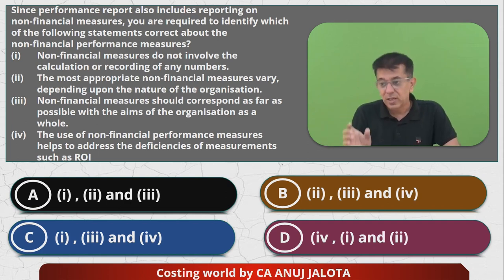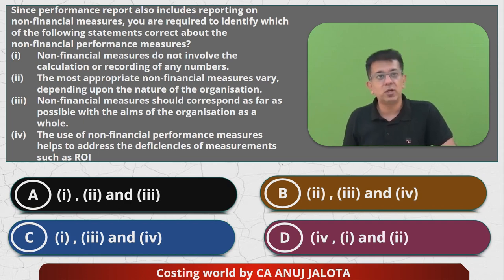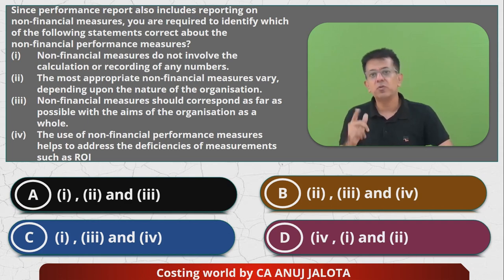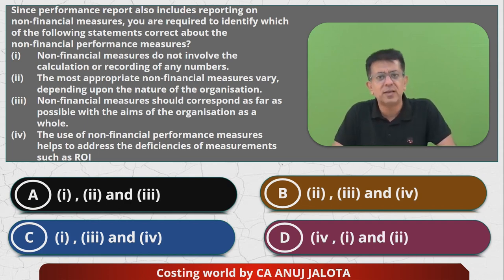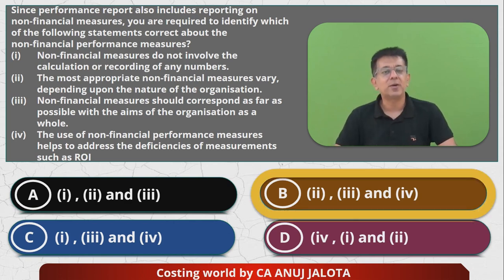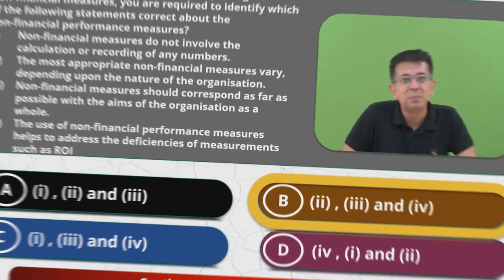The limitations of financial indicators are addressed by non-financial indicators. So point one is wrong, points two, three, and four are correct. Therefore the answer is option B — second, third, and fourth are correct. That's it, see you next time in another question. Take care, bye.